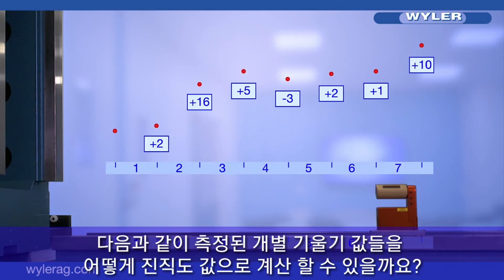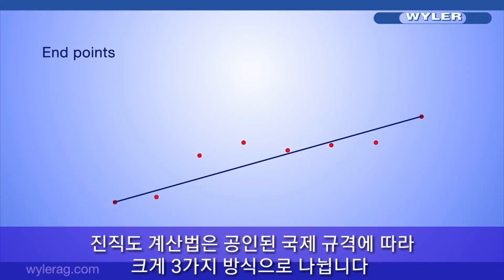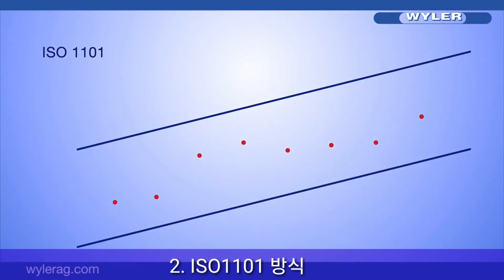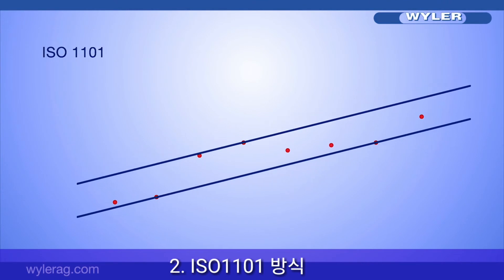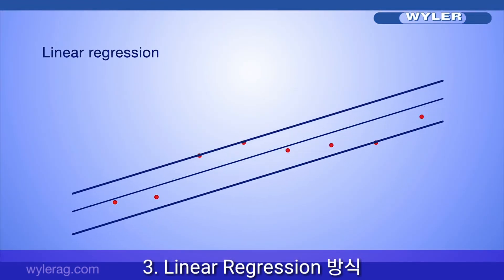How do we now assess this result? There are three possible alignment methods: alignment according to endpoints, alignment according to ISO 1101, and alignment according to linear regression.